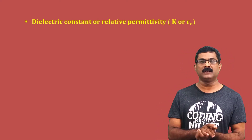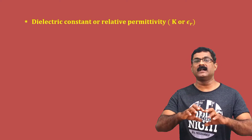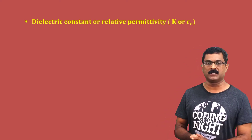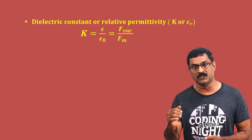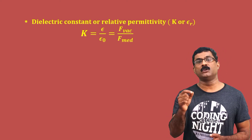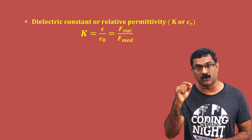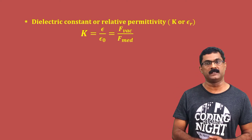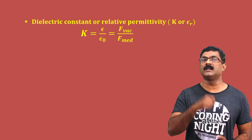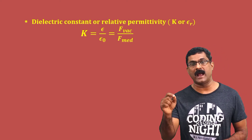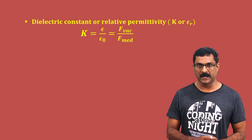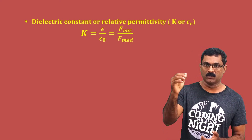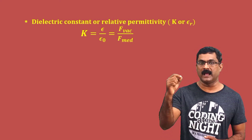We write k equal to epsilon by epsilon₀. Here, epsilon is the absolute permittivity of the medium and epsilon₀ is the absolute permittivity of vacuum or free space. k is the dielectric constant.